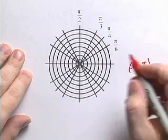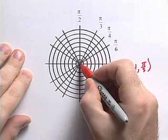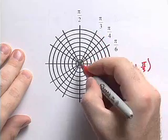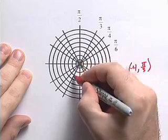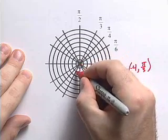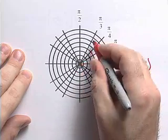To plot r as negative 4, we start at the origin. And because r is negative, we're going to go in the opposite direction. We go along this axis line right here for pi over 3.